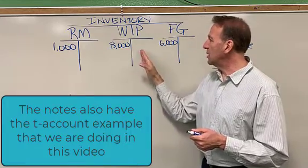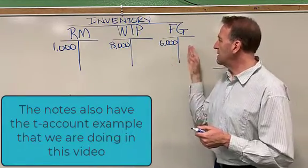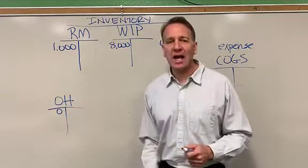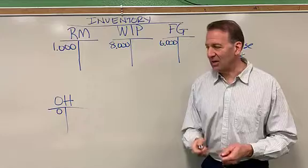The debit will increase, the credit will decrease. So this is the increasing, decreasing side. Same thing for our overhead account. So let's go ahead and get started here.